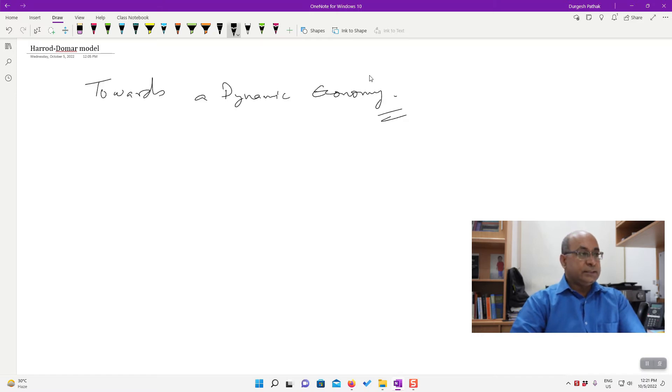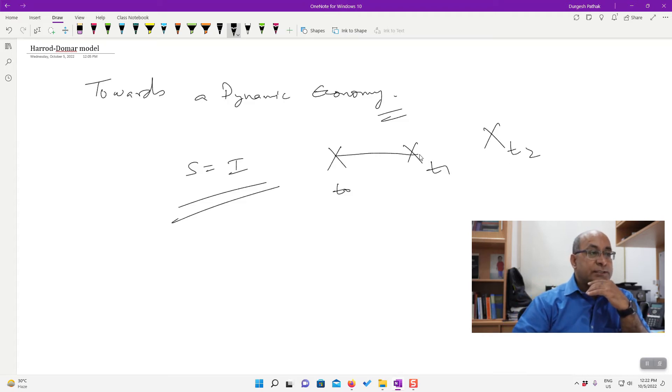If you remember the Keynesian model, it says that there will be equilibrium of saving and investment. Keynes said that there should be equilibrium of the ex ante savings and ex post investments, so that there is no surplus remaining in the economy. But if this is a snapshot picture of the economy, what if we have to talk about such equilibrium in a growing economy? Rather than just one equilibrium at T0, we need another equilibrium at T1 and another at T2, and the economy is moving between equilibriums. This brings in the dynamics in the Keynesian otherwise static model.